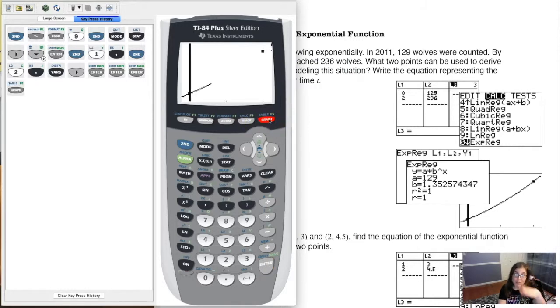If I take a look at my graph, you can see my exponential model going through those two ordered pairs. You can kind of see that curve in there showing that exponential growth. And there you go. That's how you can find your exponential model on your calculator.